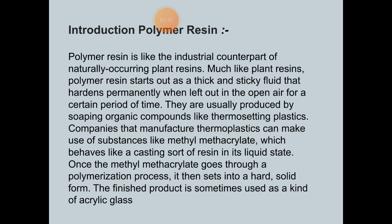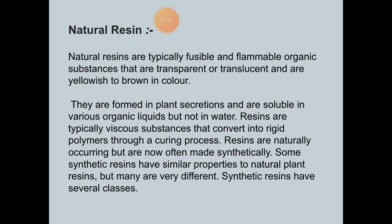The finished product is sometimes used as a kind of acrylic glass. This resin can be natural or synthetic. Natural resins are typically fusible and flammable organic substances that are transparent or translucent and yellowish to brown in color. They are formed in plant secretions and are soluble in various organic liquids but not in water. Resins are typically viscous substances that convert into rigid polymers through a curing process, and are naturally occurring but now often made synthetically.